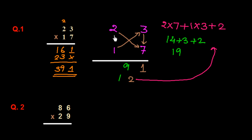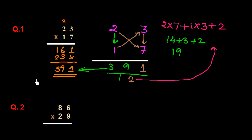We have to multiply the tens-place digits vertically. 2 times 1 is 2, plus 1 carry is 3. So we get 391 — the same answer we received with the traditional method.